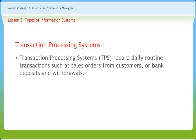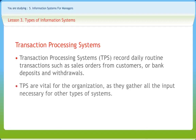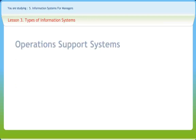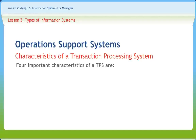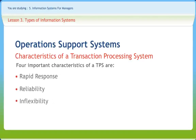Transaction Processing Systems, or TPS, record daily routine transactions such as sales orders from customers or bank deposits and withdrawals. They are vital for the organization as they gather all the inputs necessary for other types of systems. TPS provides the basic input to the company's database, and a failure in the TPS often means disaster for the organization. Four important characteristics of a TPS are rapid response, reliability, inflexibility, and controlled processing.